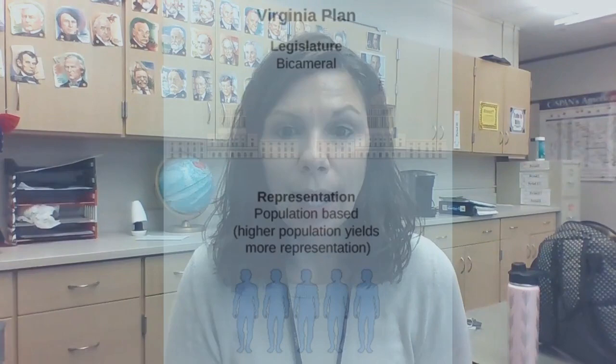Under this plan, Congress would choose a national executive and a national judiciary. The plan set the agenda for much of the convention's work, but some of the delegates — namely those from the smaller states like Delaware, Maryland, and New Jersey — thought that this plan was far too radical.